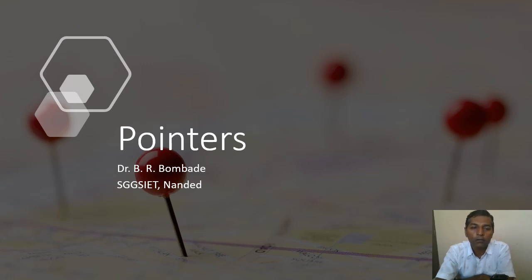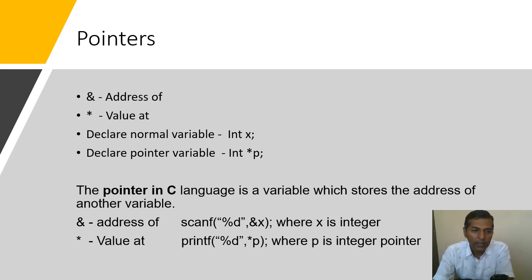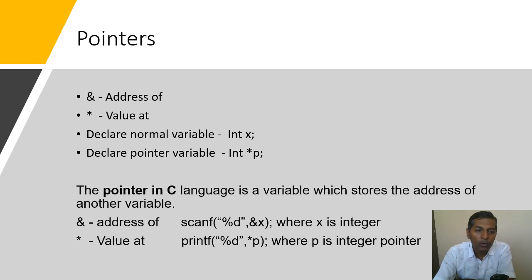Welcome once again to the lecture on data structures. Today we'll discuss pointers, a concept you have already studied in your first semester. We will revise a few important points regarding pointers. The operators used with pointers are: address-of, represented by the ampersand (&), and value-at, represented by the star (*). These two operators are very important while using pointers.